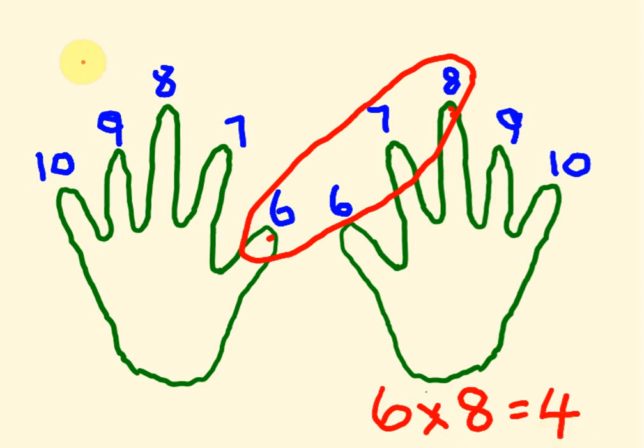With the other fingers, what we have is we have four over here. One, two, three, four. And we have two over here. One, two. And we times these two numbers together. Four times two is eight. That's our answer, 48.